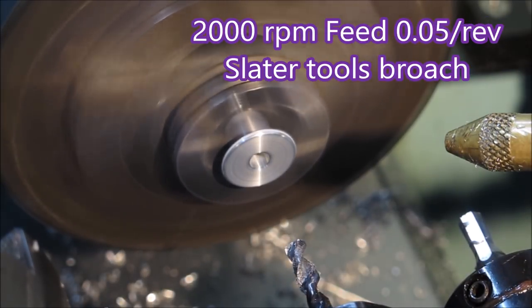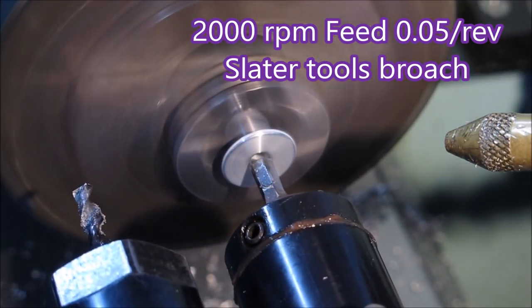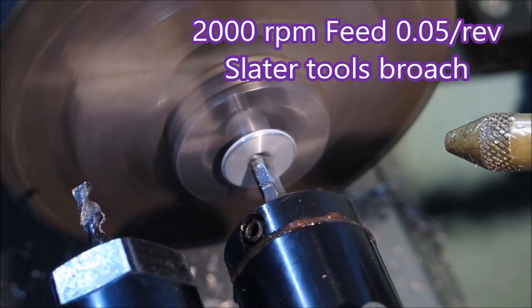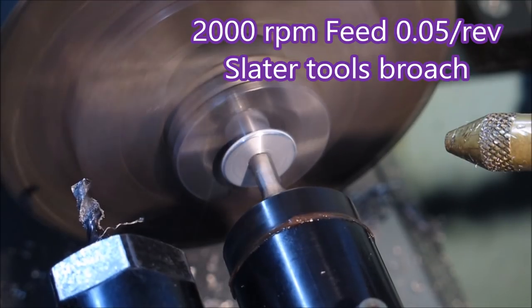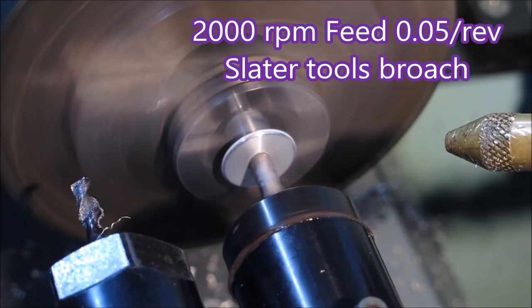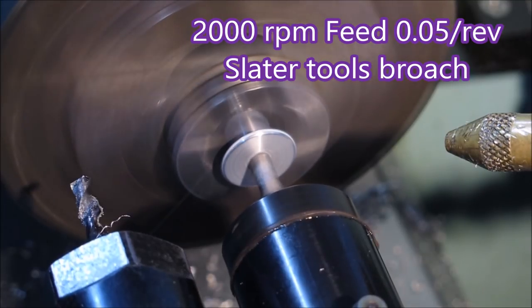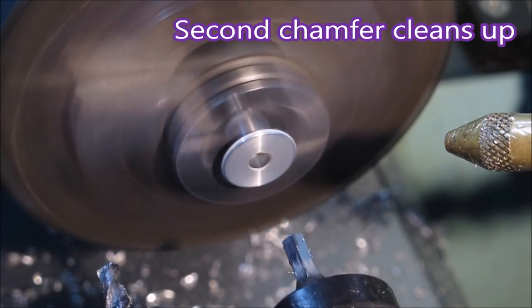To get the rotary broach started—rotary broach by Slater Tools in the USA—I slowed this right down so you can see it's doing nothing. Then it actually touches the part and the part makes it spin. Once it gets register, it just keeps going in and cutting. That's the normal speed it would cut at.